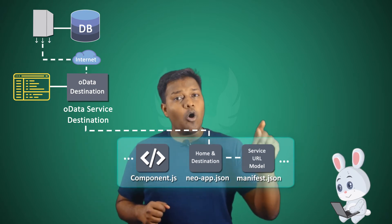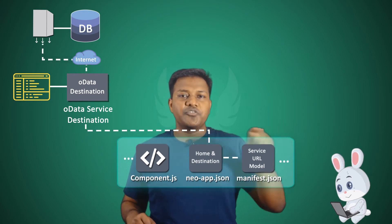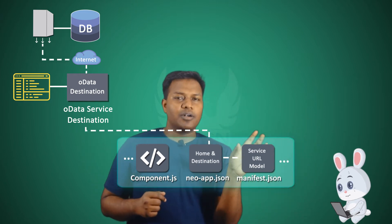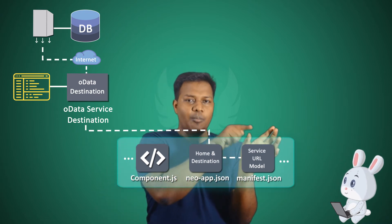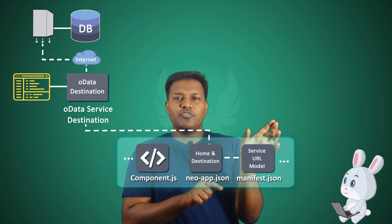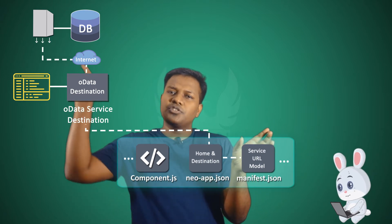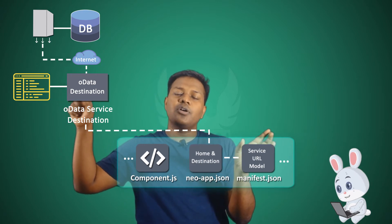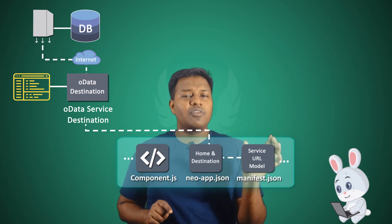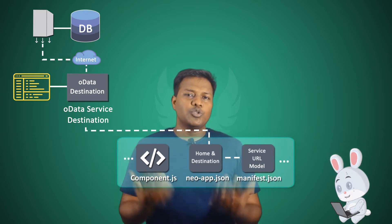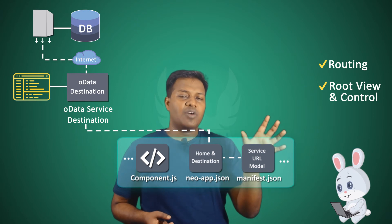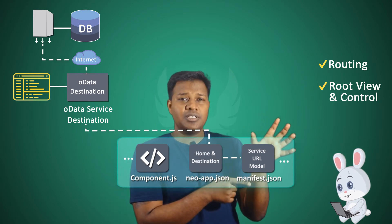In manifest.json you specify the location of the service, which normally has the extension .SVC as a common reference to that service. You will have that reference in manifest.json, where you say what particular service from this OData destination you want to use, and you also create a model based on that service. The model will be formed from the service — the service destination comes in your neoapp.json, which goes into the internal connections and then reaches the server where your OData model is stored.